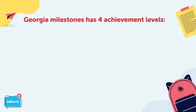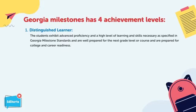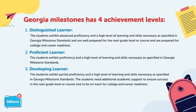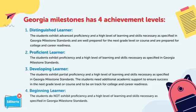Georgia Milestones have four achievement levels. Level 1: Distinguished Learner — students exhibit advanced proficiency and a high level of learning and skills, are well prepared for the next grade level or course, and are prepared for college and career readiness. Level 2: Proficient Learner — students exhibit proficiency and a high level of learning and skills as specified in Georgia Milestone Standards. Level 3 students need additional academic support to ensure success in the next grade level or course and to be on track for college and career readiness. Level 4: Beginning Learner — students do not exhibit proficiency and the level of learning and skills necessary as specified in Georgia Milestone Standards.